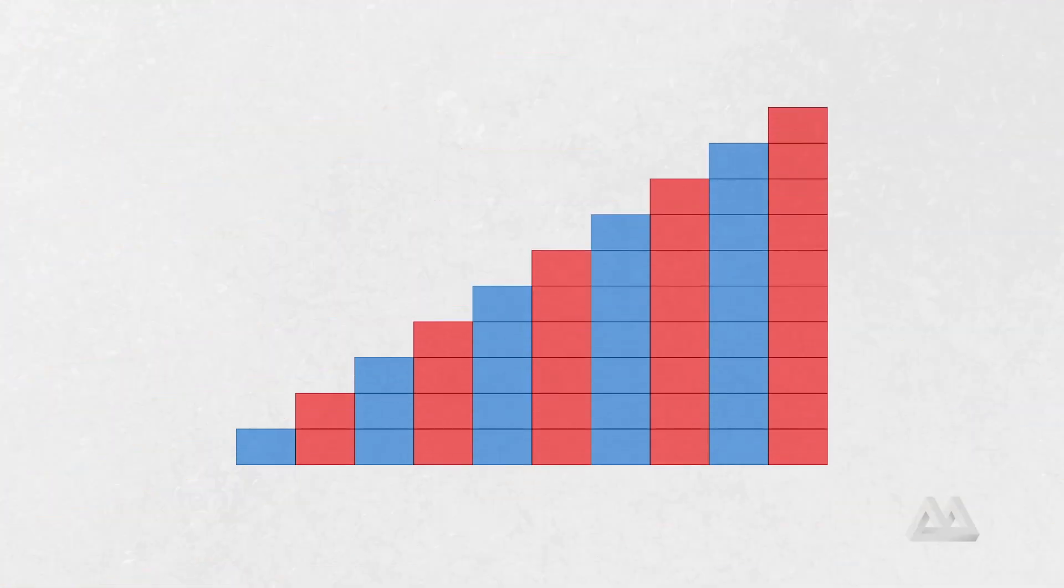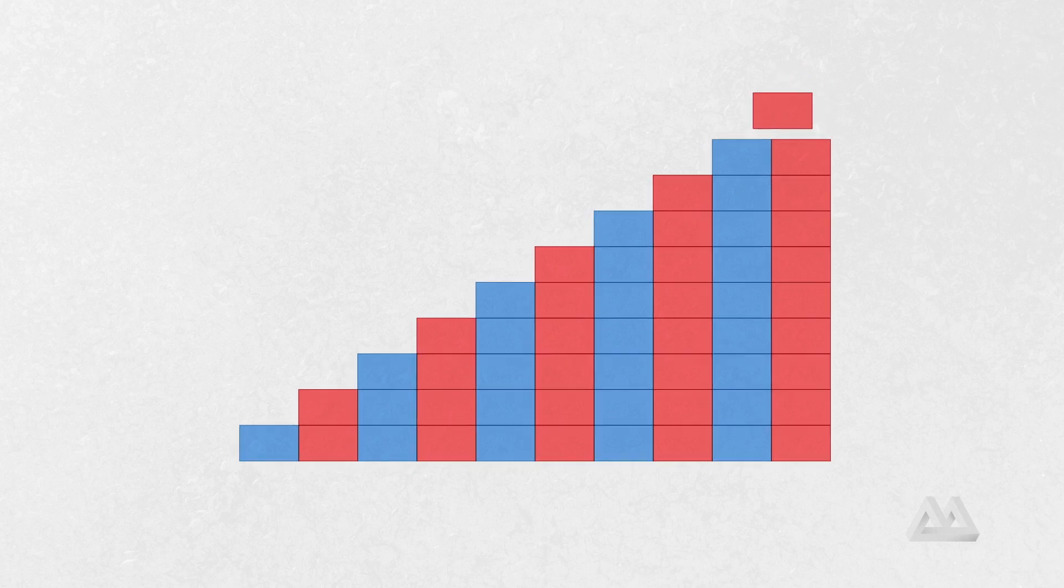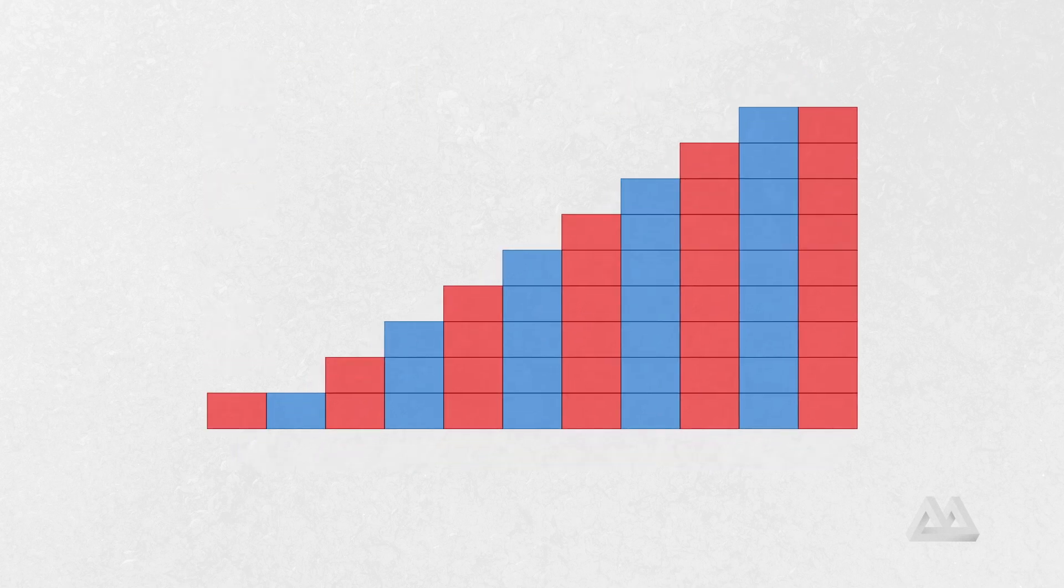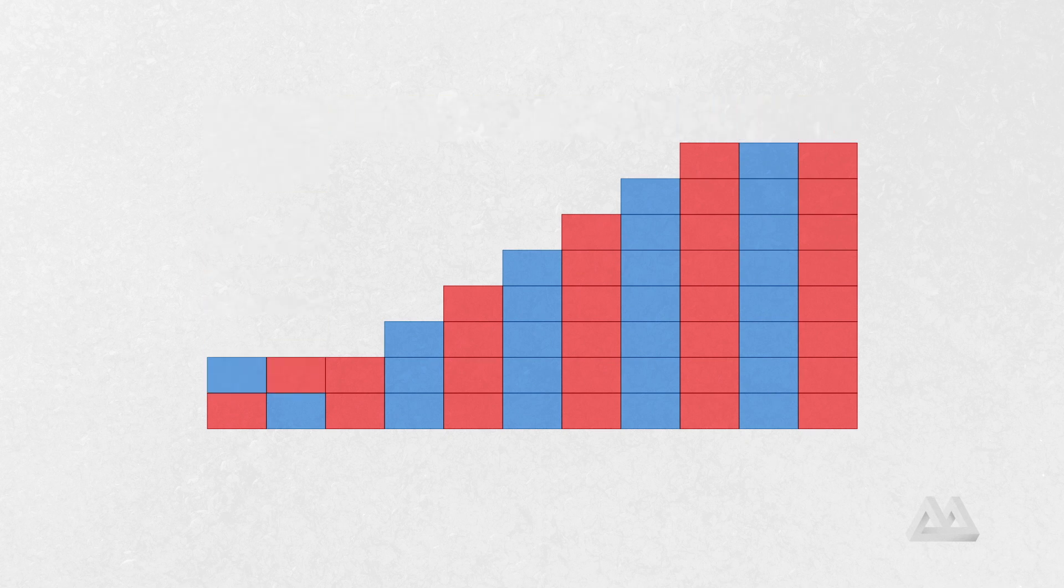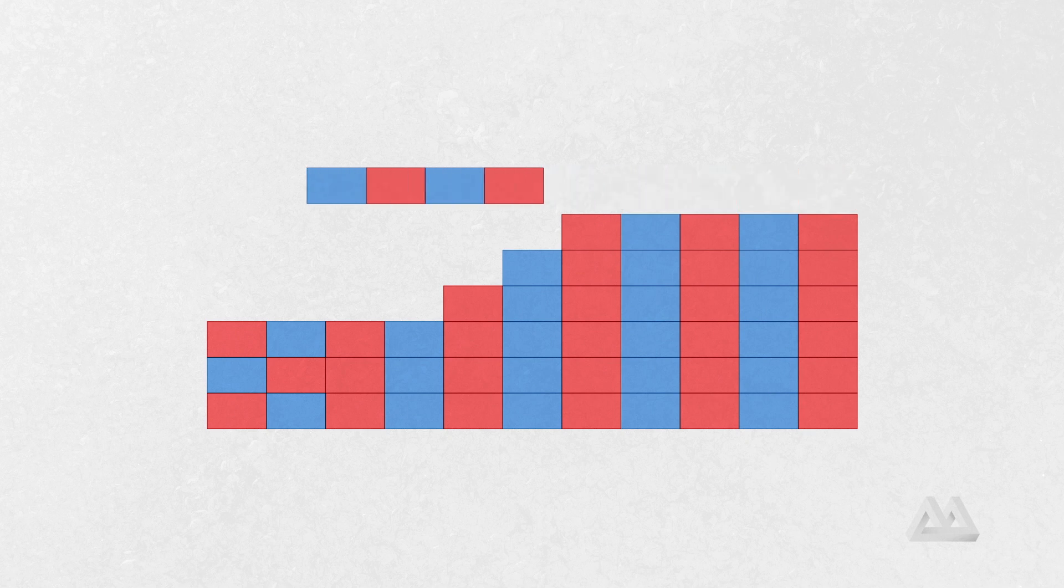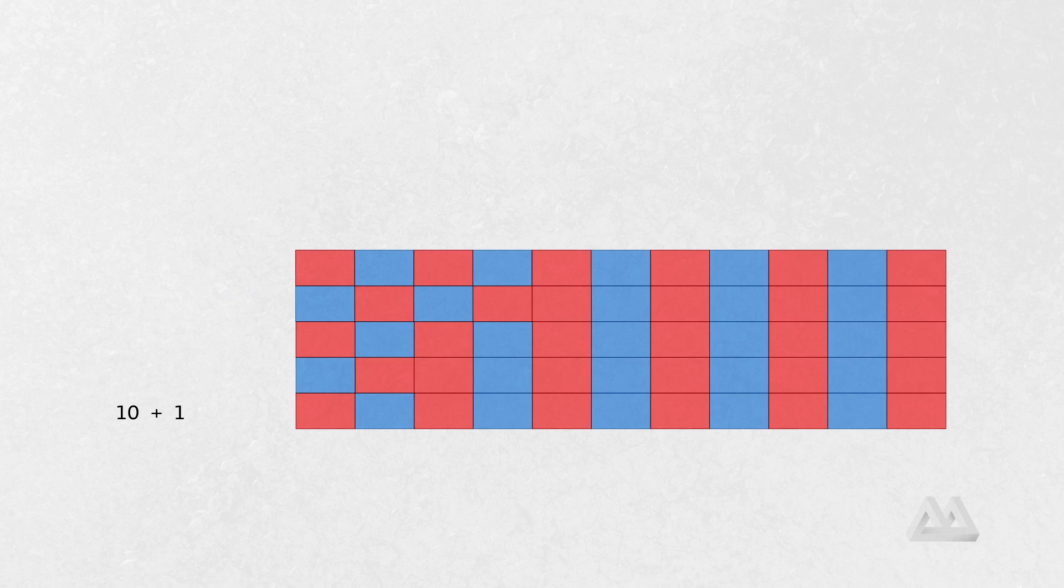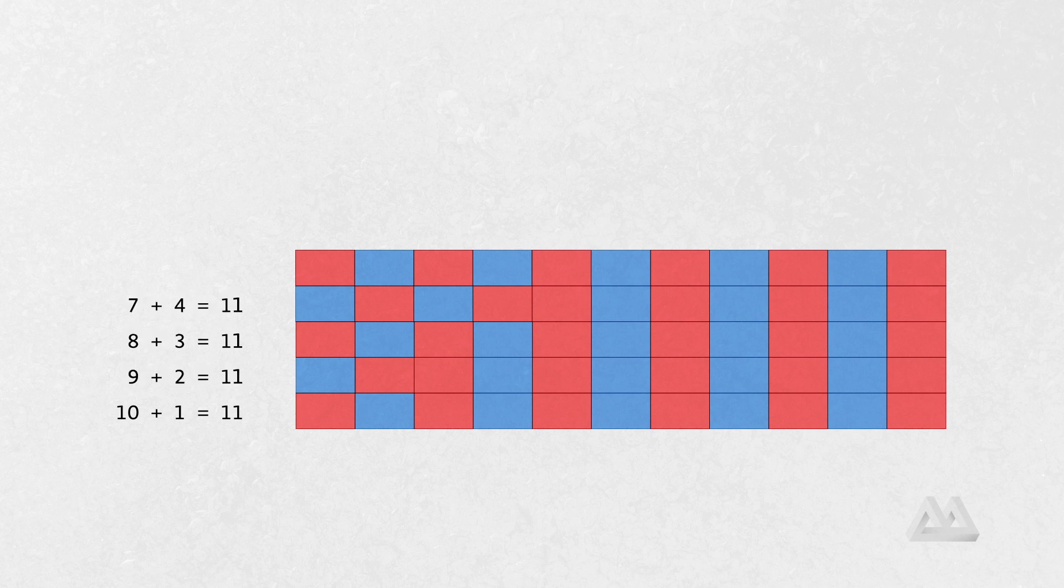So, if we could rearrange this into a rectangle, then we could just multiply the base times the height, and then we'll have the area, which will represent the sum of the numbers from 1 to 10. Here's what we can do. We can take this 1 from the top and add it over here to this end. Do the same thing for the 2, 3, 4, and the 5. So, let's see what we have here. We have a 10 and 1. We added the rod of 1 to the rod of 10 to give us 11. So, here we have 9 and 2, 8 and 3, 7 and 4, and 6 and 5.